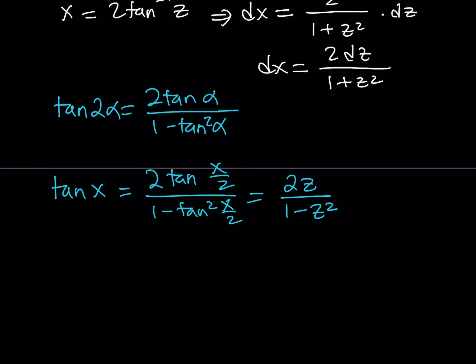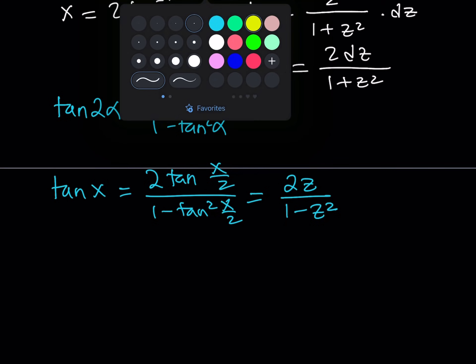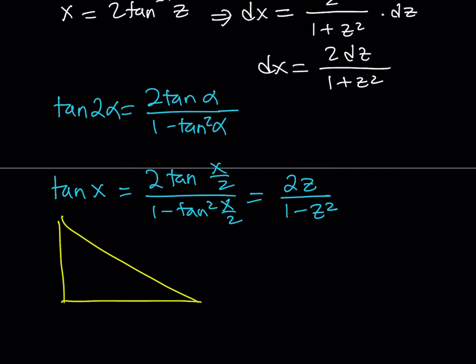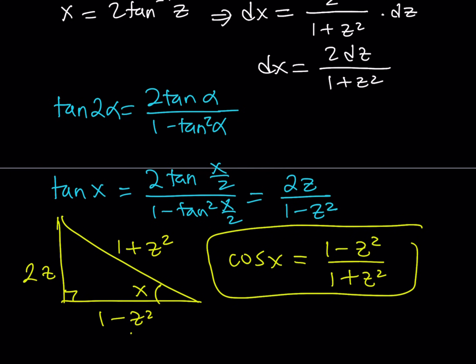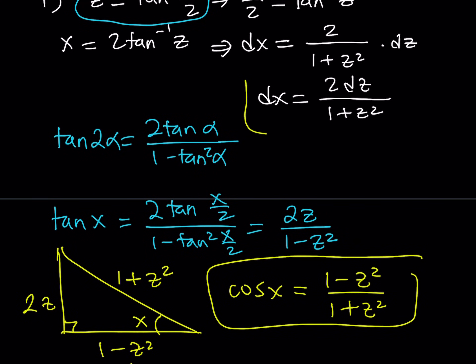Now, why did I find tangent x? Because I'm going to show you something real cool. We're going to draw a right triangle. This is my angle x, and tangent is 2z over 1 minus z squared. If you use the Pythagorean theorem, you're going to find that the hypotenuse is 1 plus z squared. From here, cosine x is adjacent over hypotenuse, which is 1 minus z squared over 1 plus z squared. This is a painful method, but it allows me to find cosine x. I have dx, and that's all I need.